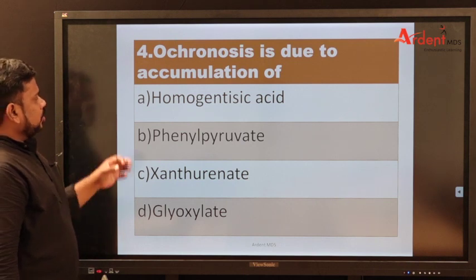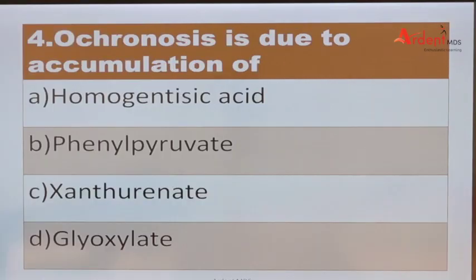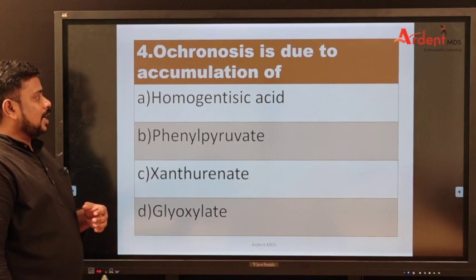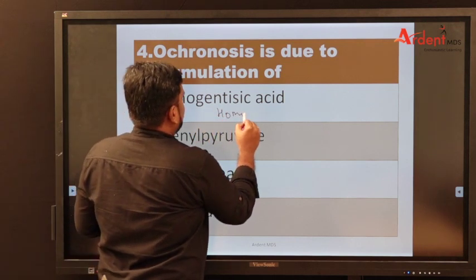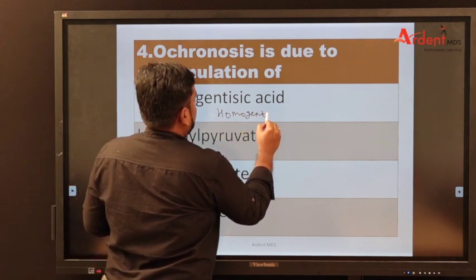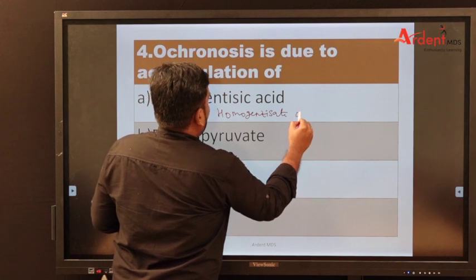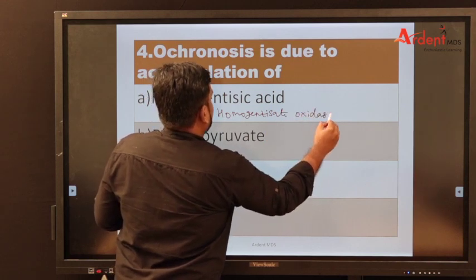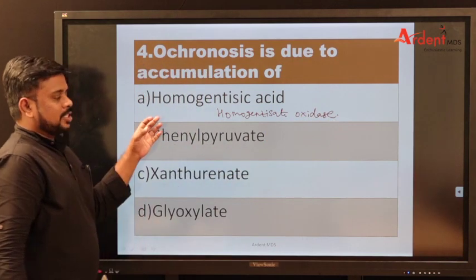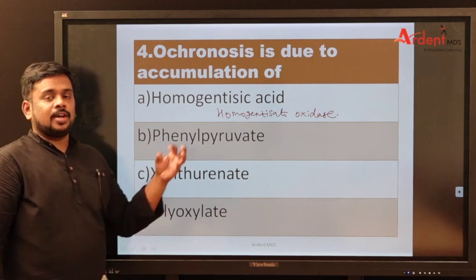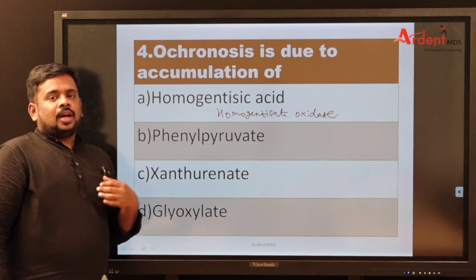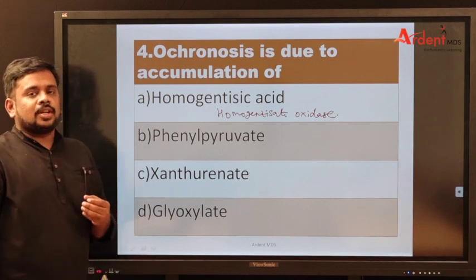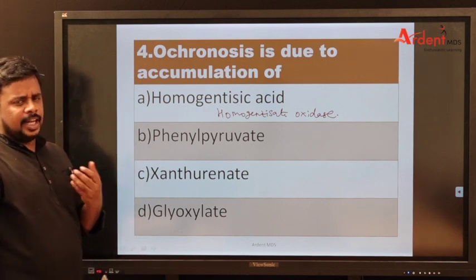Ochronosis is due to accumulation of homogentisic acid, caused by a defect in the enzyme homogentisate oxidase. This leads to accumulation of homogentisic acid, which is deposited in joint spaces — this is called alkaptonuria.